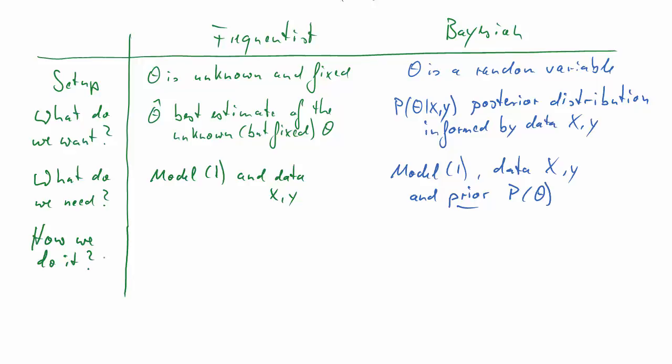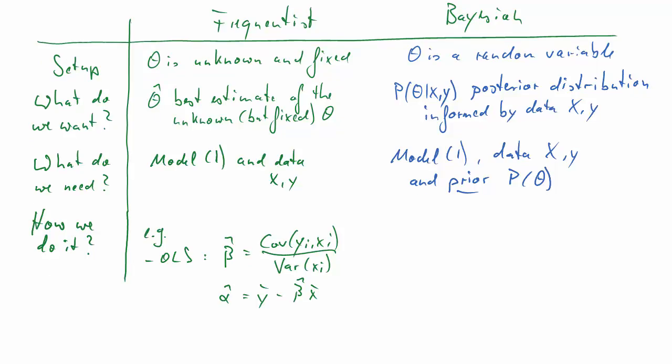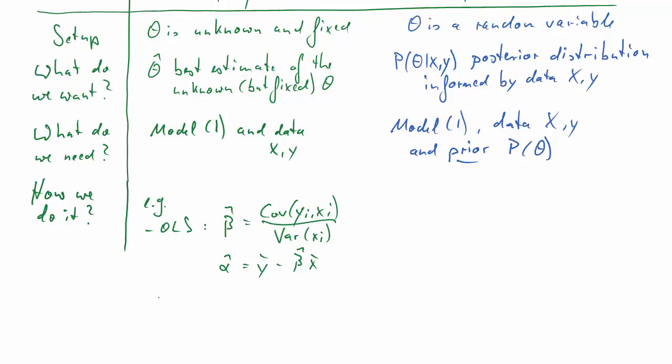So, how do we do it? How do we get what we want? What would the frequentist do? That depends on what estimation method you use. If you do a course in econometrics, you would know some different ones. For instance, OLS: you get beta hat by calculating the covariance between Y and X divided by the variance, and the best value for alpha hat you get using this little formula.